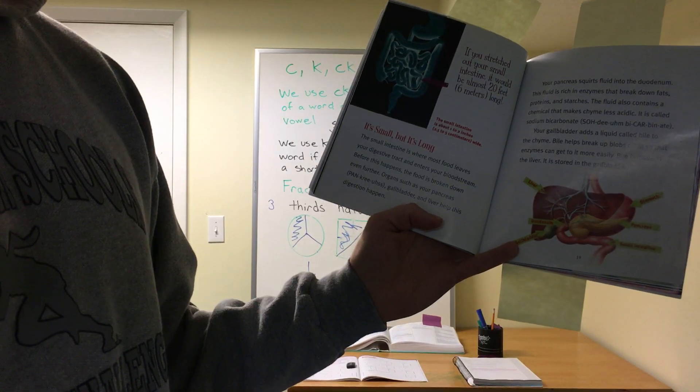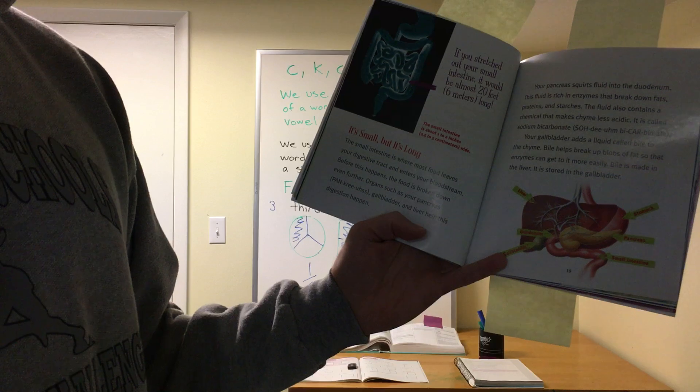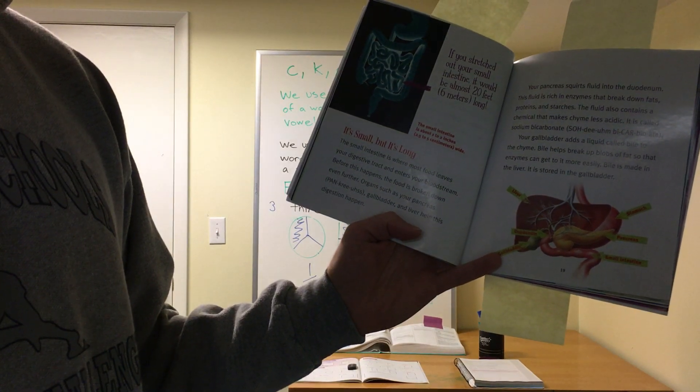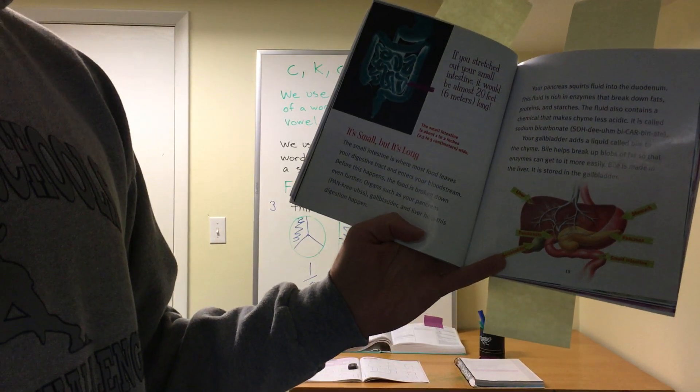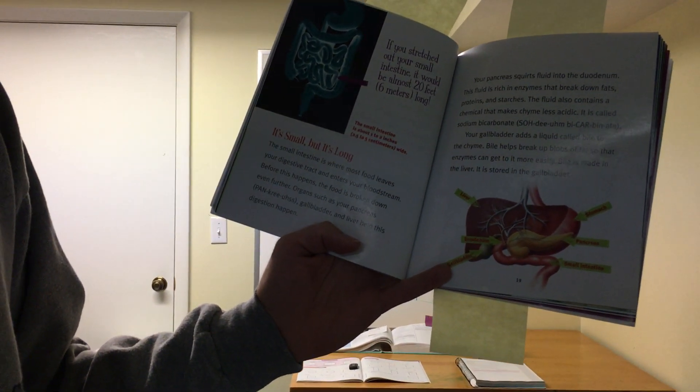It's small, but it's long. The small intestine is where most food leaves your digestive tract and enters your bloodstream. Before this happens, the food is broken down even further. Organs such as your pancreas, gallbladder, and liver help this digestion happen.